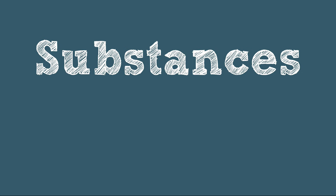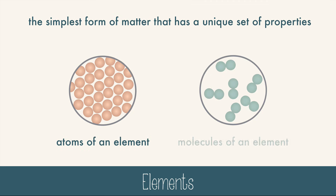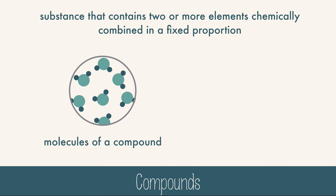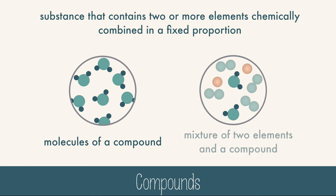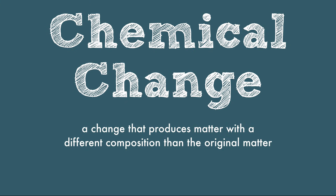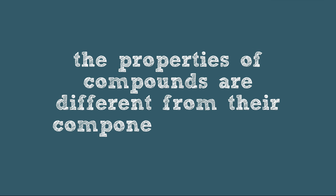Let's go back to substances for a moment. Pure substances can also be divided into two categories: elements and compounds. Elements are the simplest form of matter that has a unique set of properties. Elements can be made of single atoms or molecules of the same element bonded to themselves. Compounds are substances that contain two or more elements which are chemically combined in a fixed proportion. You can break compounds down into elements through chemical change — a change that produces matter with a different composition than the original matter, where the atoms get rearranged. For example, the sugar in bread was burned, which caused a chemical change that broke the sugar down into black carbon and water.